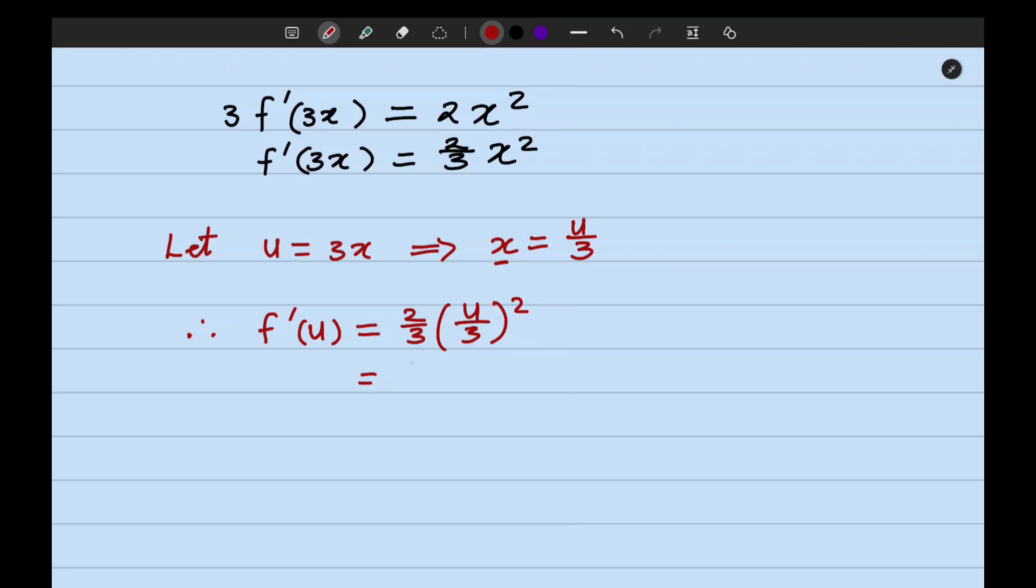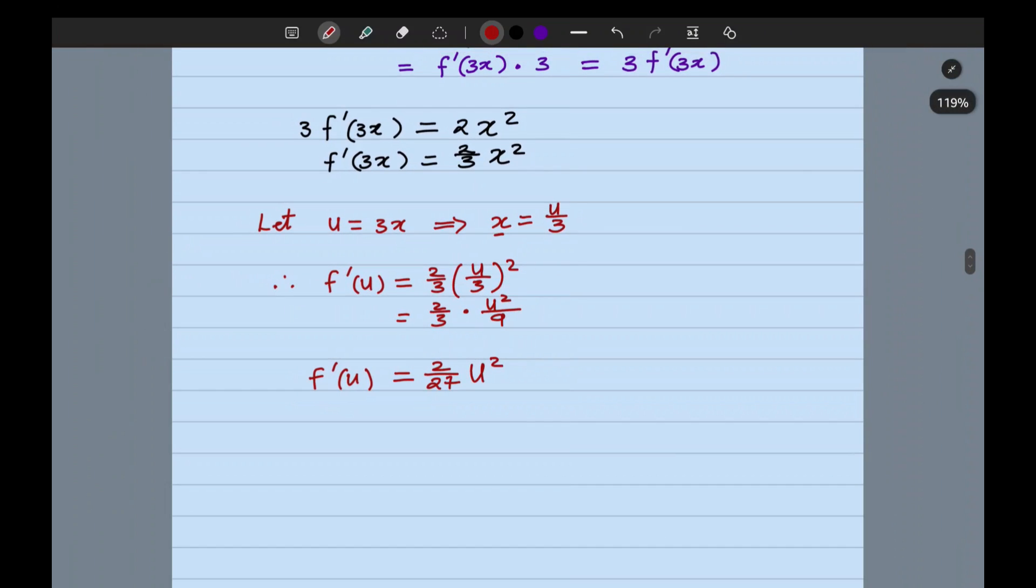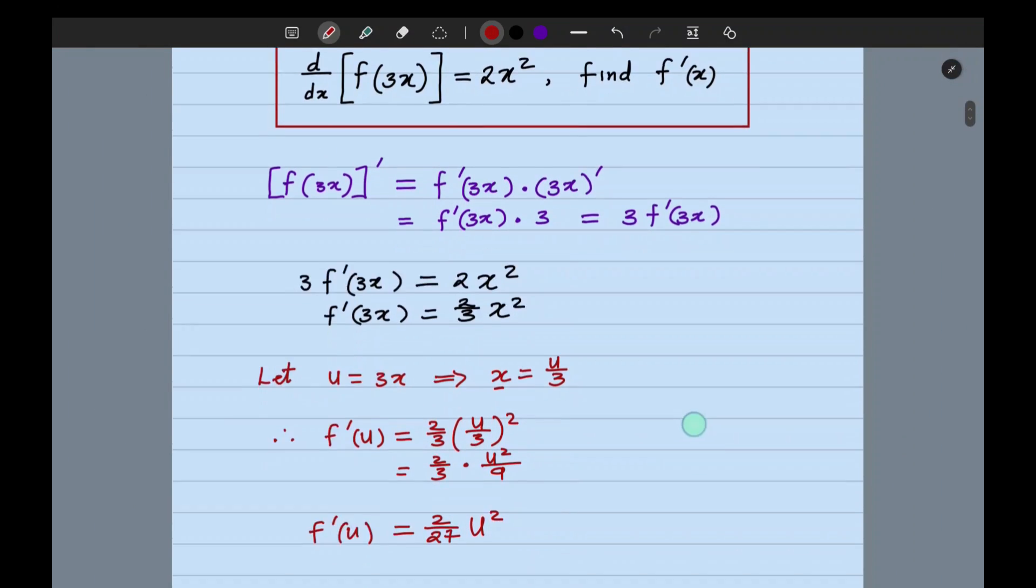What do we get? This is equal to 2 over 3 multiplied by u squared over 9. That answer looks like this: f prime of u is equal to 2 over 27 u squared. So we've gone from 3x to u. When do we actually get to x?